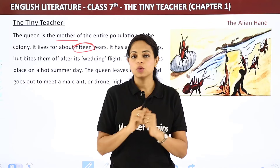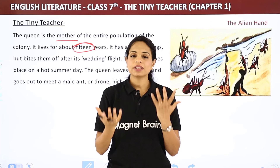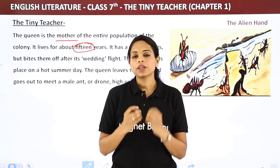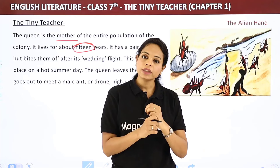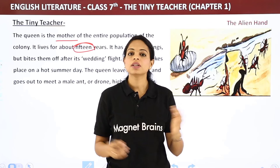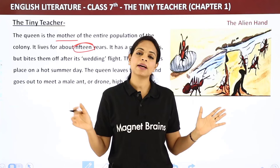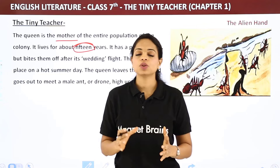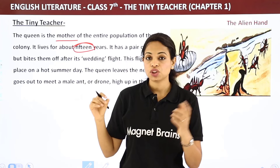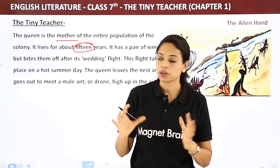What is a wedding flight? When the queen ant is big enough, she flies high up in the air to meet the male ant, which is also called a drone. They mate with each other up in the air. This flight takes place on a hot summer day. The queen leaves the nest and goes out to meet the drone high up in the air.